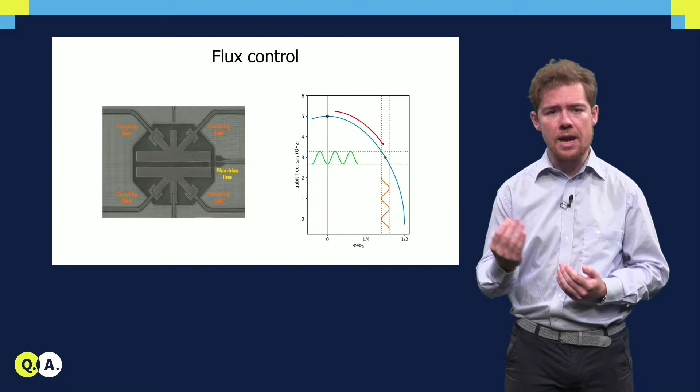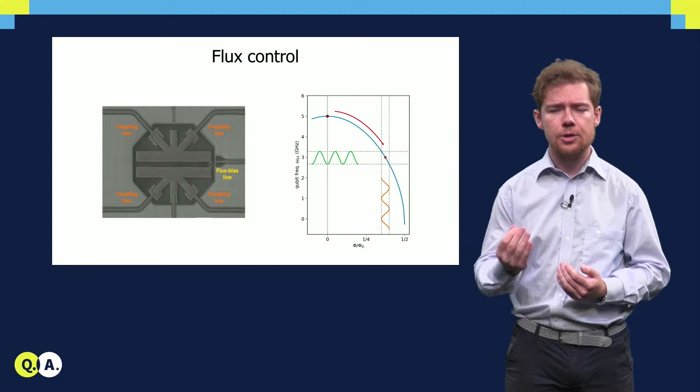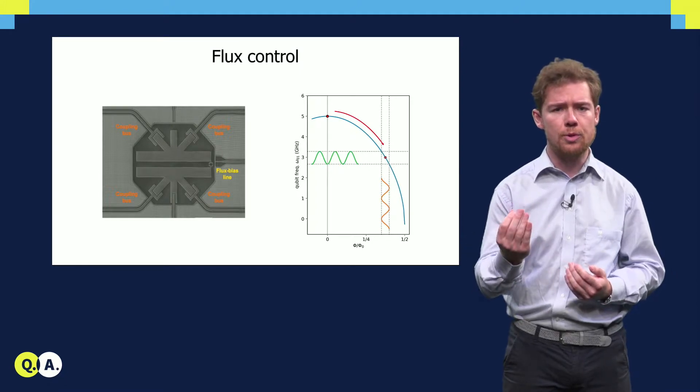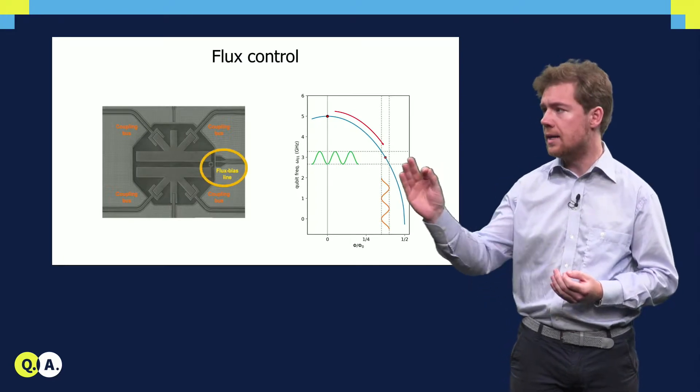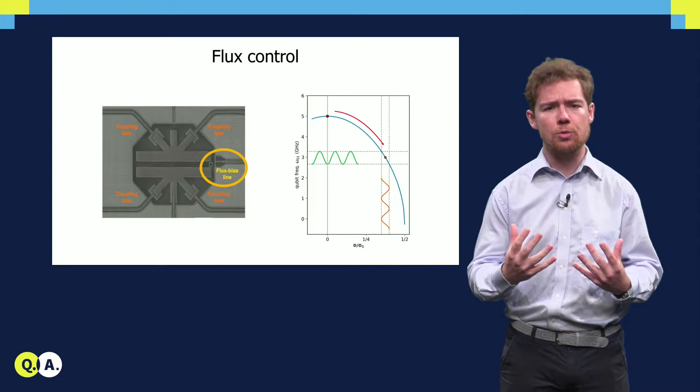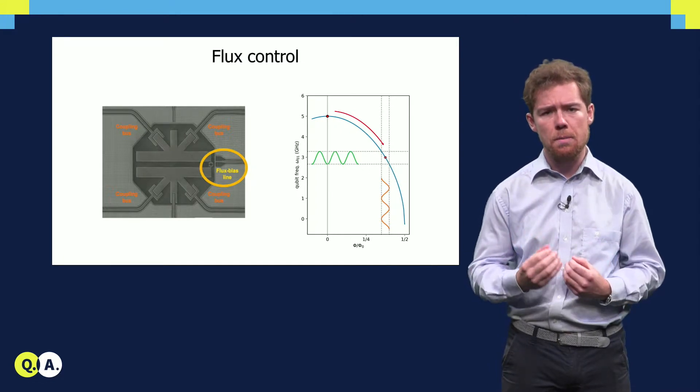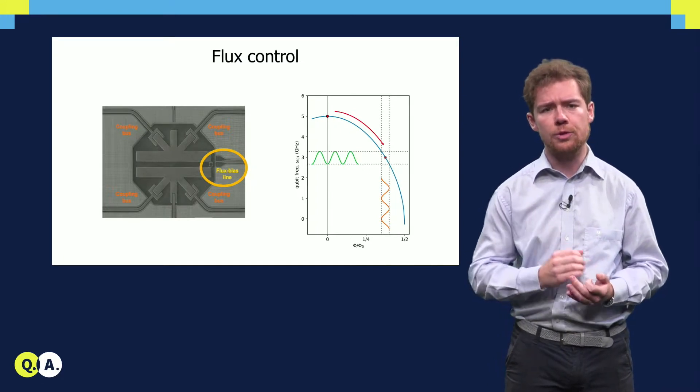To be able to tune in and out of resonance with an interaction, the transition frequency of a transmon qubit must be controlled. By applying a current to the flux bias line, the amount of flux through the SQUID loop of the transmon changes, making it possible to control the qubit's frequency.